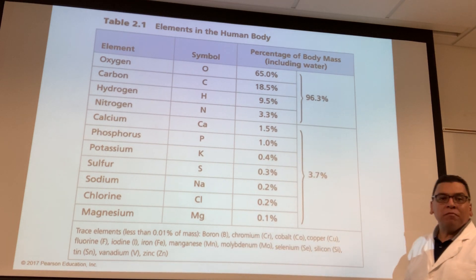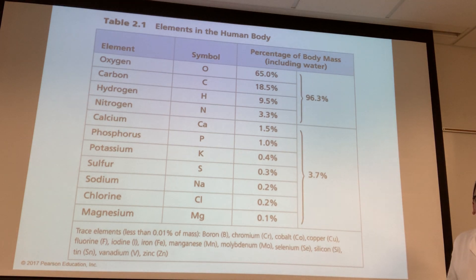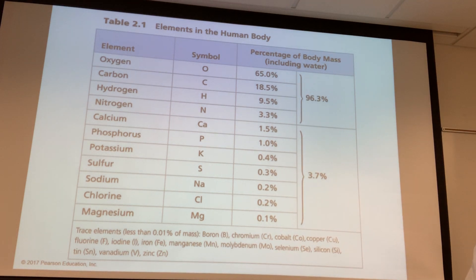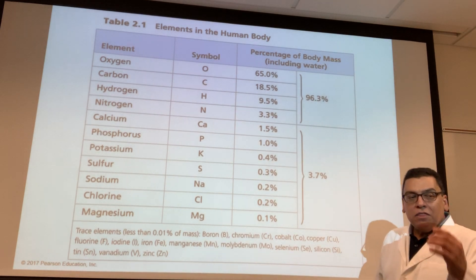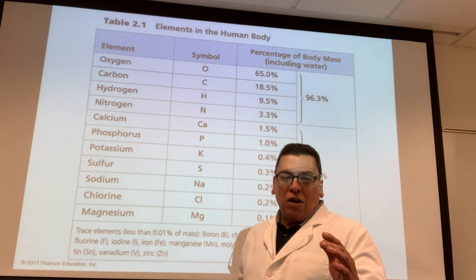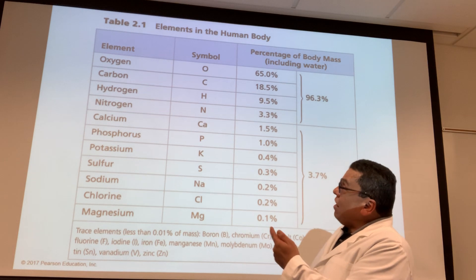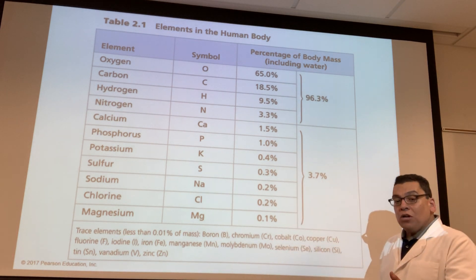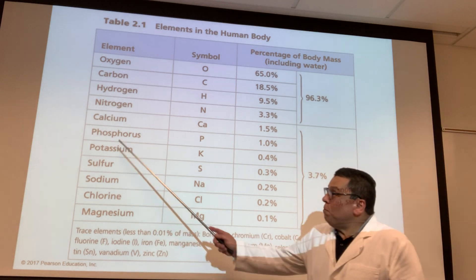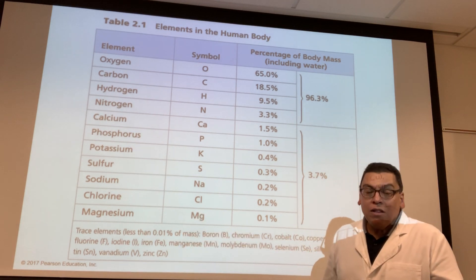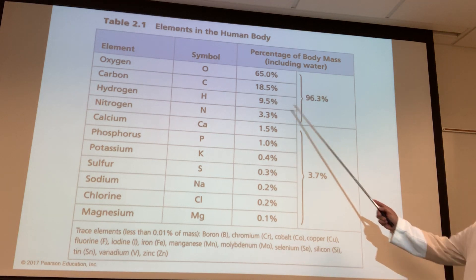That spells C-O-H-N, so I remember it as Cohen. Now, will I ask you about that percentage number? No. All I'm saying is that you need to know that the four main elements that make you who you are is carbon, oxygen, hydrogen, and nitrogen. Do you have other things? Of course you do. You have calcium in your bones, and so forth, but the main ones are these.